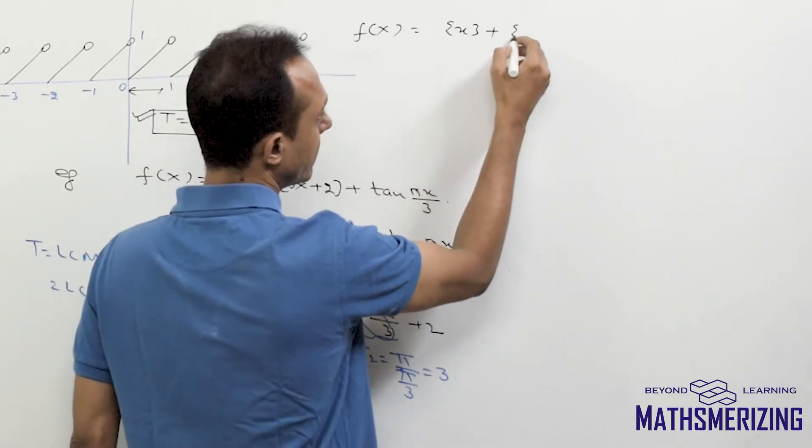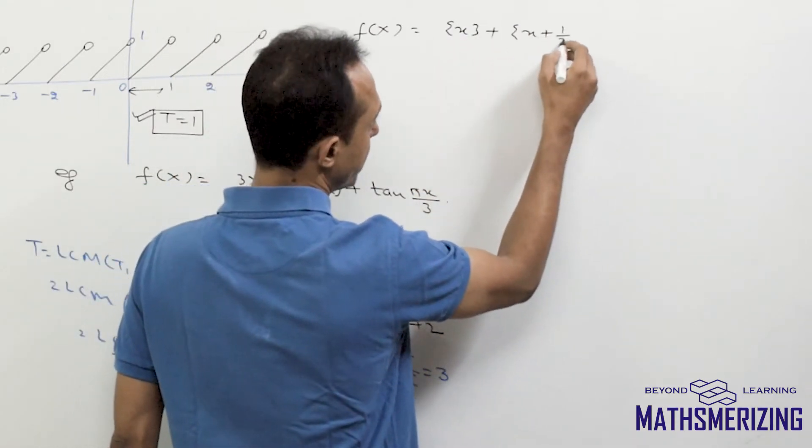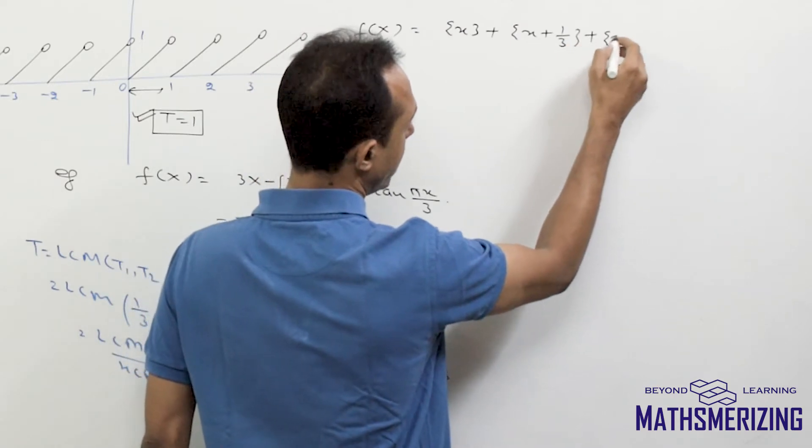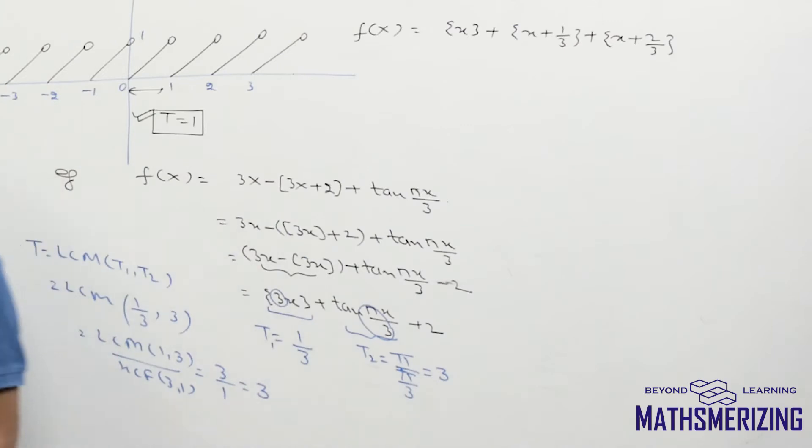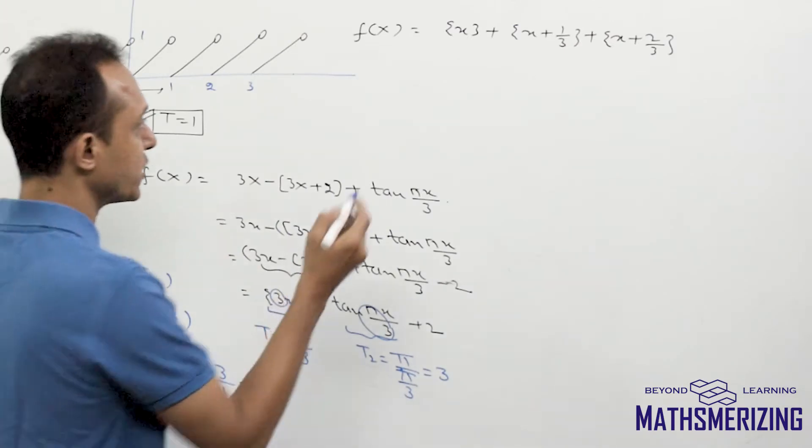Fraction part of x, fraction part of x plus 1 by 3, fraction part of x plus 2 by 3. I need to find the fundamental period for this given function.